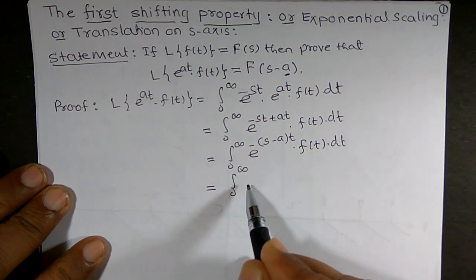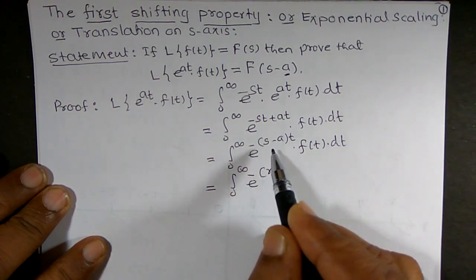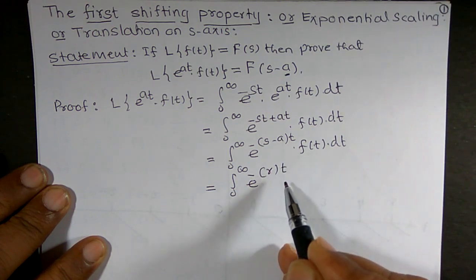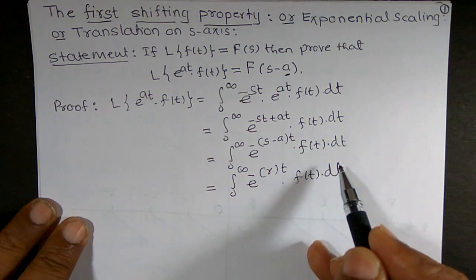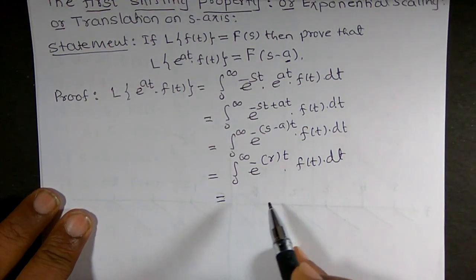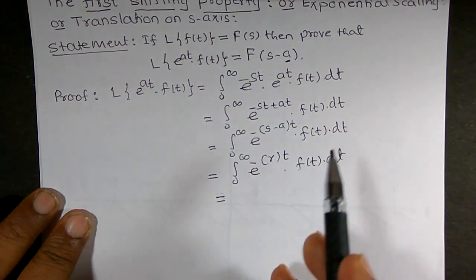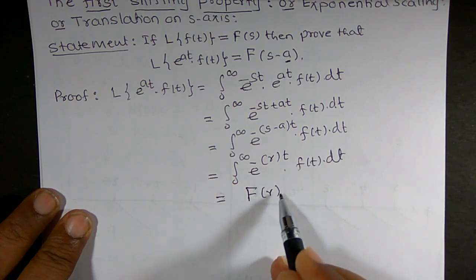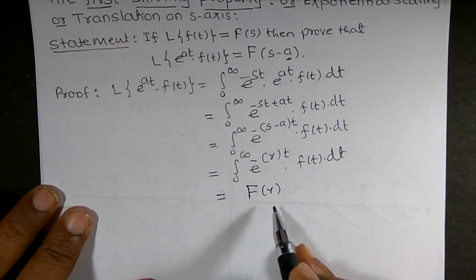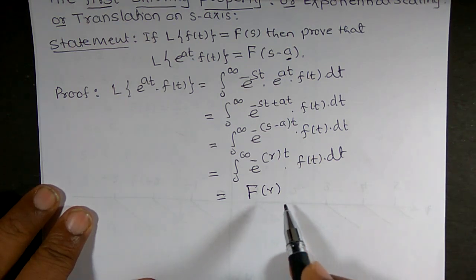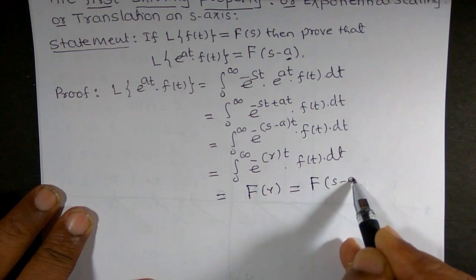Now this can be written as the integral of e^(-rt)·f(t) dt, where I replace s minus a by r. By definition of Laplace transform, this is of the type integral of e^(-st)·f(t) dt, which equals F(s). So this can be written as F(r), and since r = s - a, this equals F(s - a).